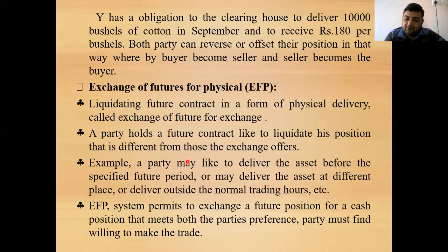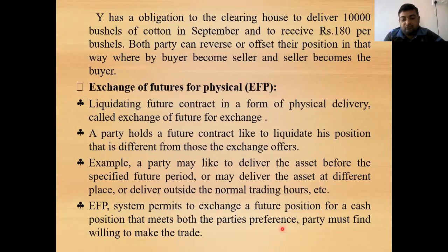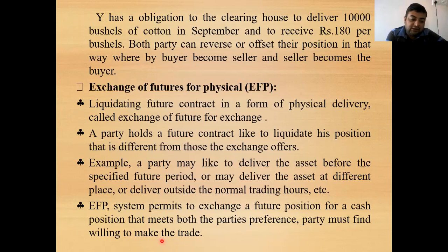A party may like to deliver the asset before the specified futures period, or deliver the asset at a different place — outside the normal trading hours. This is known as exchange of futures for physical (EFP). Generally, when exchanging a futures contract for physical delivery, it can be done before expiry or on the expiry date. The EFP system permits exchange of a futures position for a cash position that meets both parties' preferences. It is a bilateral contract — both parties must agree and offset the contract.